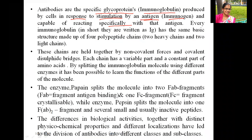This antigen can also be known as immunogen and is capable of reacting specifically with that antibody which was produced against it. Every immunoglobulin, written in short as Ig, shares the same basic structure made up of four polypeptide chains.